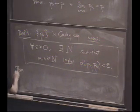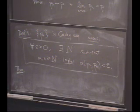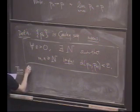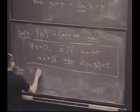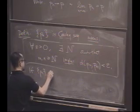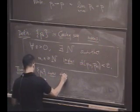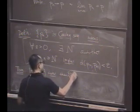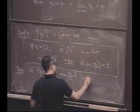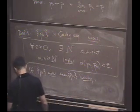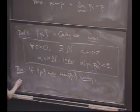And now, let's prove our first theorem. What's the relationship between these two notions? Are they the same? What do you think at least is true? If it converges, it's Cauchy. So let's prove that. If PN converges, then PN is Cauchy.